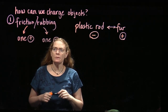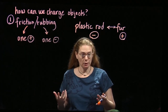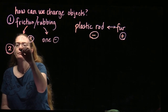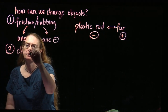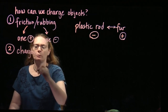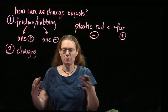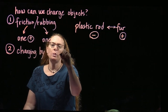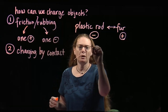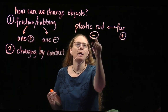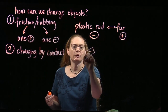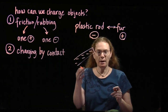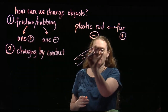That's the first way we can get charged objects. The second way is pretty straightforward: charging by contact — touch. If I have a plastic rod that I charged up with some fur, it has a whole bunch of extra negatives. It still has positives, but I'm showing the extra ones.